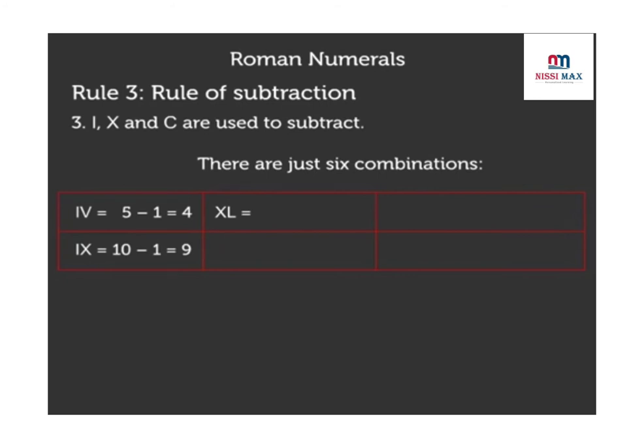XL is equal to 50 minus 10 is equal to 40. XC is equal to 100 minus 10 is equal to 90. CD is equal to 500 minus 100 is equal to 400. CM is equal to 1000 minus 100 is equal to 900.